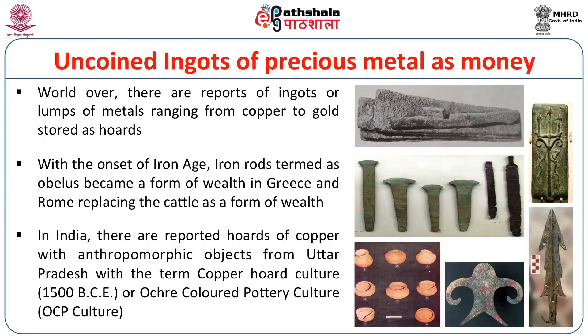The Vedas speak of a variety of uncoined metallions like Nishka, Suvarna, Shatamana, Pana, Pada, and Chakra. Uncoined ingots of precious metals ranging from copper to gold were stored as hoards in India. In Uttar Pradesh, the copper hoard culture, also called the Ochre Colored Pottery (OCP) culture, dated to about 1500 BC, reveals copper objects resembling swords and anthropomorphic figures considered as forms of wealth. This gives us the idea that metal was seen as money, and all that was required to make a coin was to give it a stamp — a development that took another 600 years, placing the earliest coinages at about 700 BC.